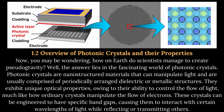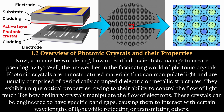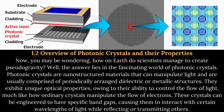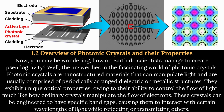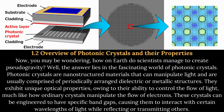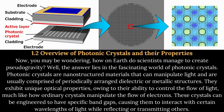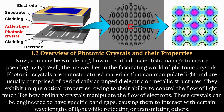1.2 Overview of photonic crystals and their properties. How do scientists manage to create pseudogravity? The answer lies in the fascinating world of photonic crystals. Photonic crystals are nanostructured materials that can manipulate light and are usually comprised of periodically arranged dielectric or metallic structures. They exhibit unique optical properties owing to their ability to control the flow of light, much like how ordinary crystals manipulate the flow of electrons. These crystals can be engineered to have specific band gaps, causing them to interact with certain wavelengths of light while reflecting or transmitting others.